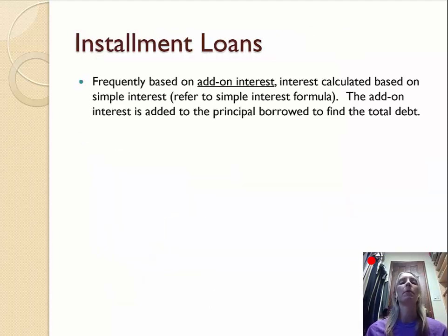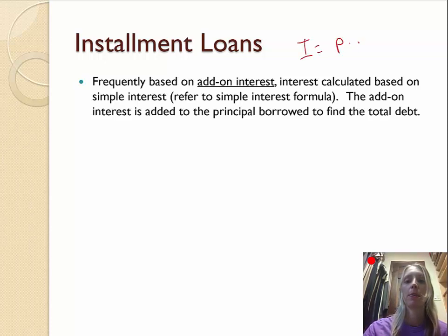Okay. So installment loans. Frequently based on add-on interest. That's interest calculated based on simple interest. So you might recall the simple interest formula is I = P × r × t. And remember rate is usually given as a percent. You need to convert it to a decimal or a fraction by dividing it by 100. The add-on interest is added to the principal borrowed to find the total debt owed.